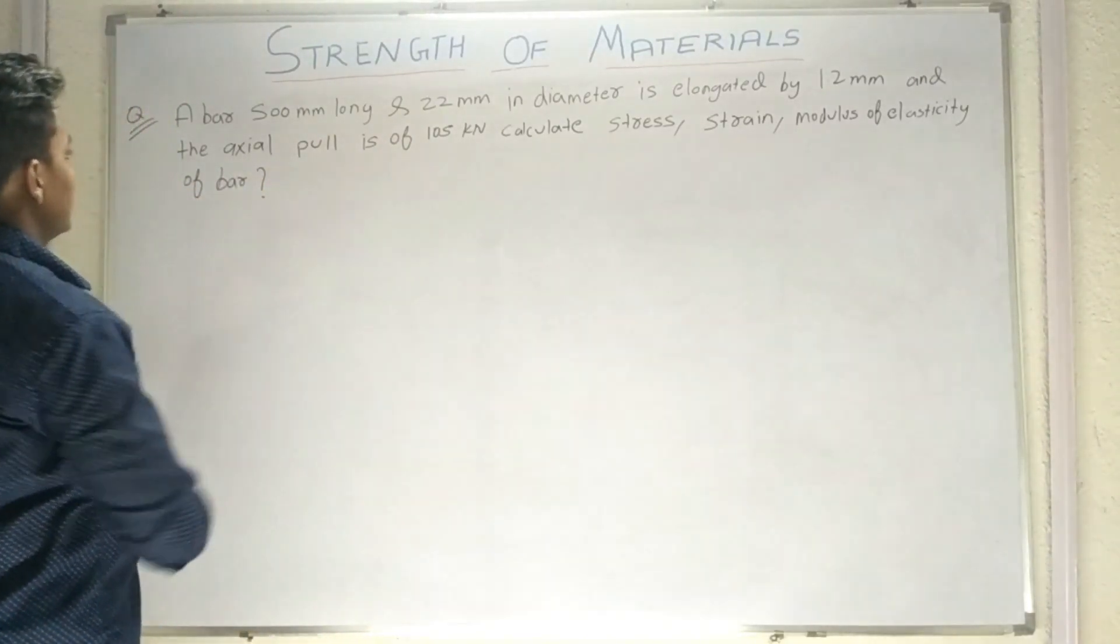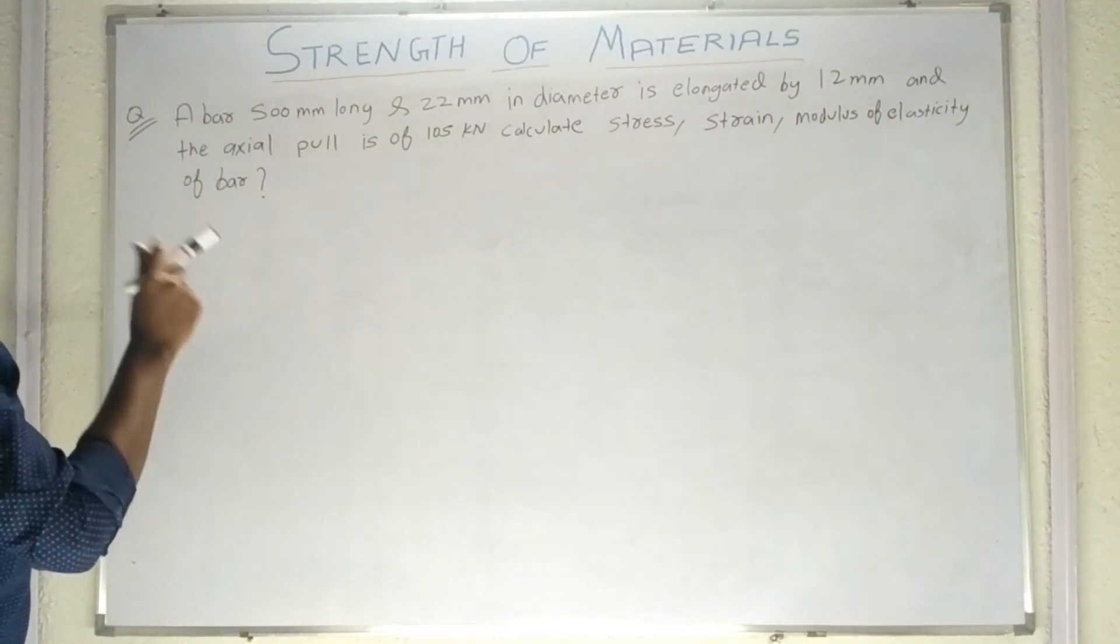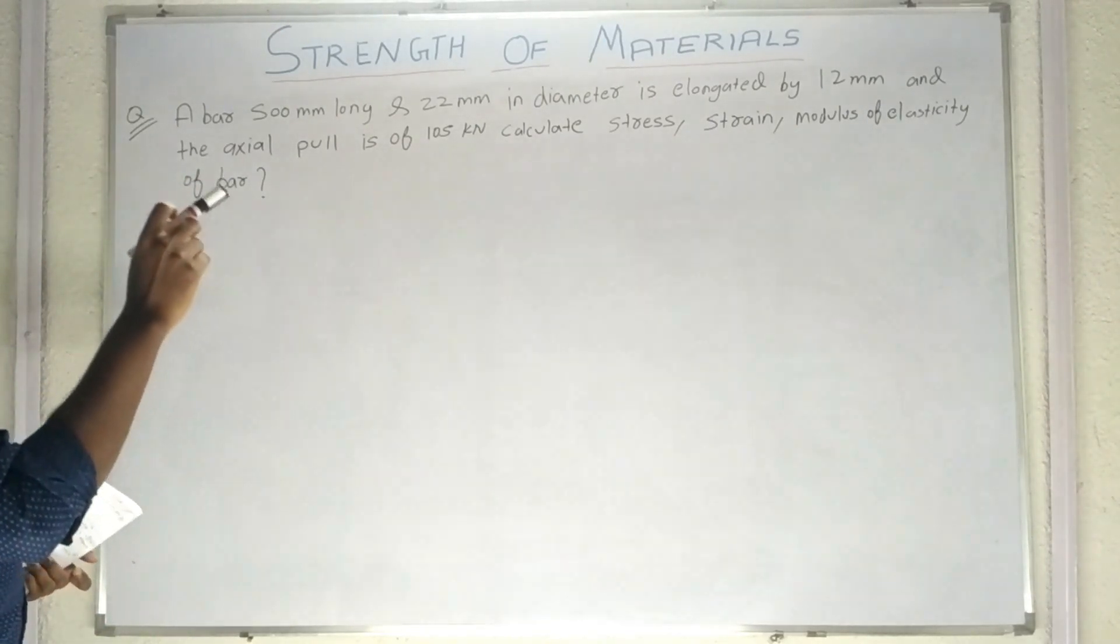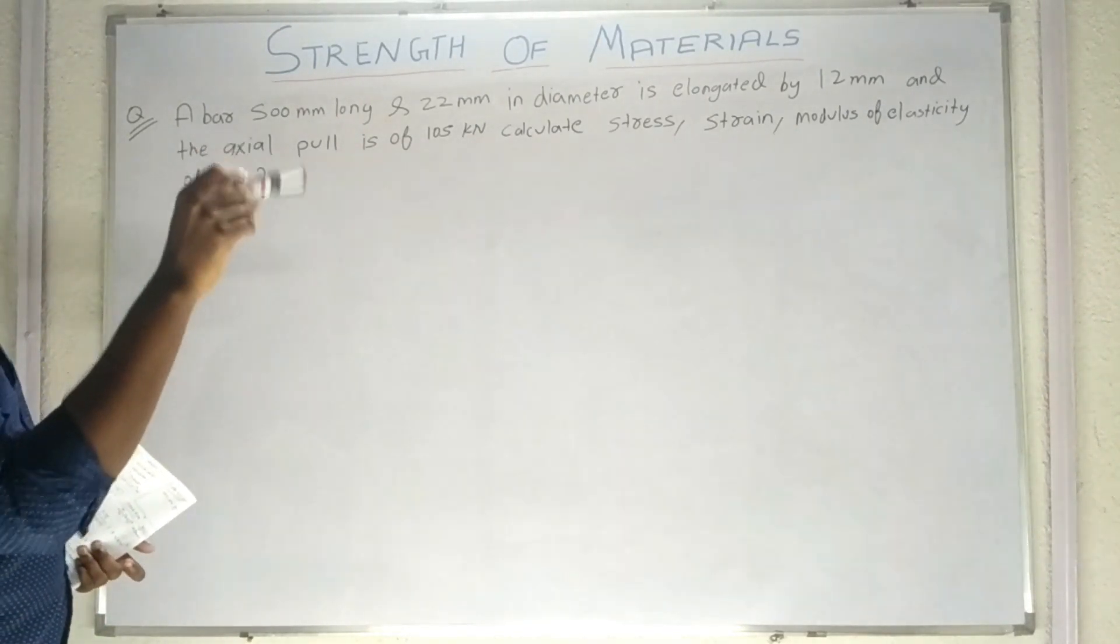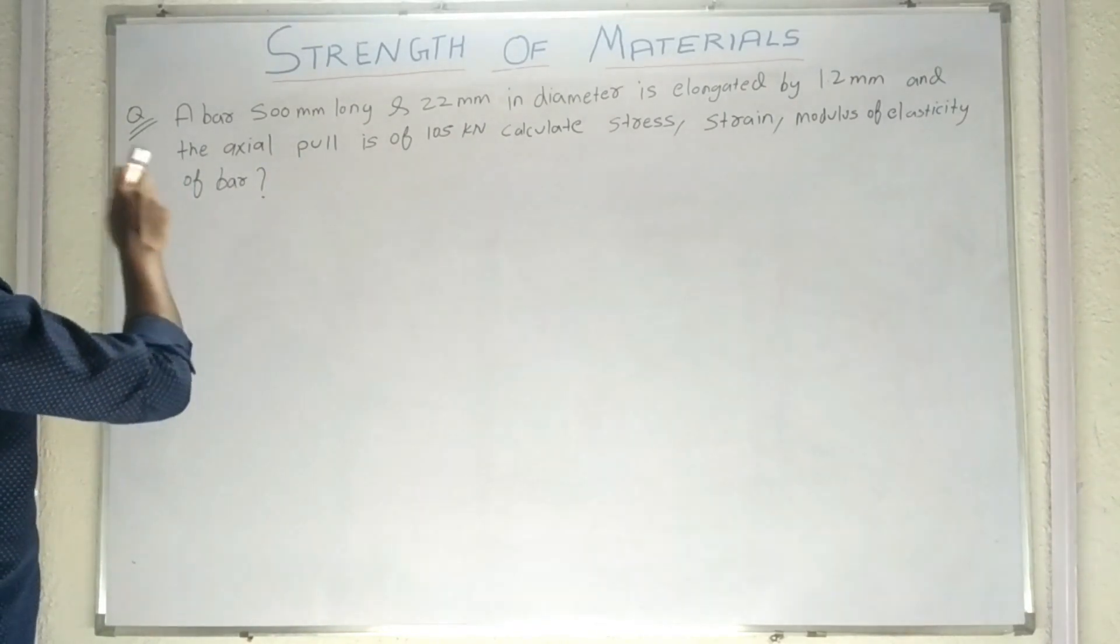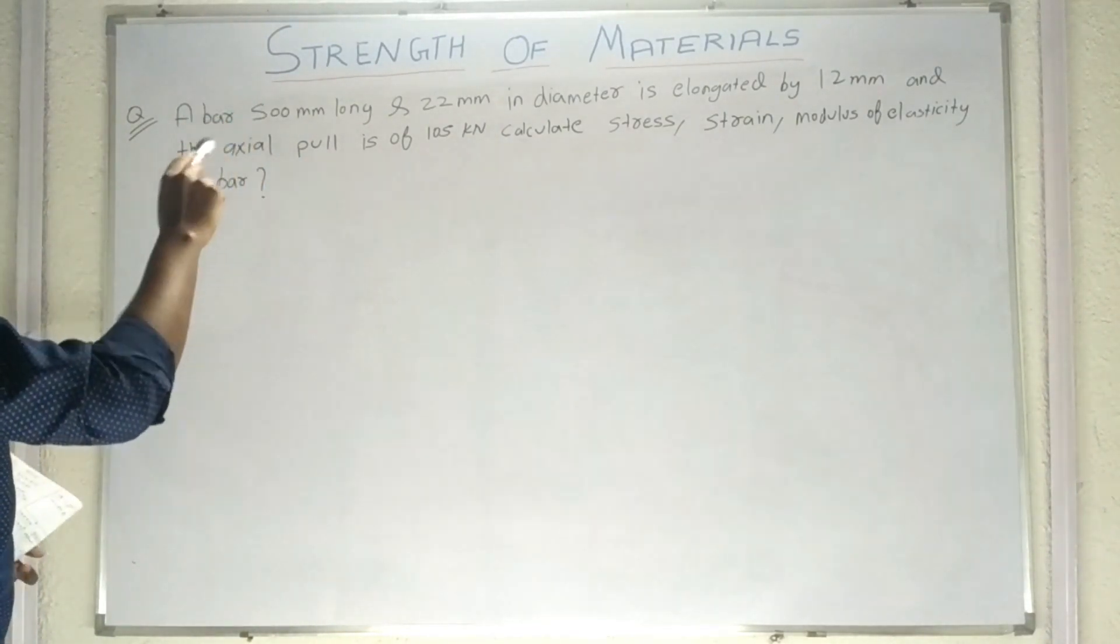So question number BI: A bar 500 mm long and 22 mm in diameter is elongated by 1.2 mm and the actual pull is of 105 kN.